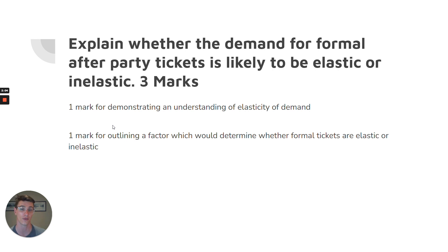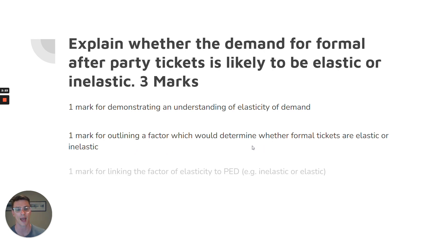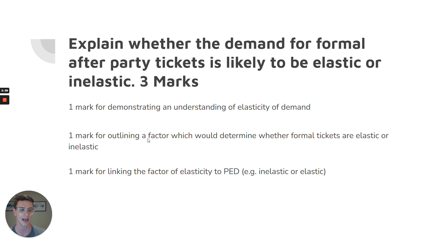The factors of elasticity of demand are: the degree of necessity, the availability of substitutes, time, and the percentage of income. So the second mark is for you to state which factor you think will determine whether it's elastic or inelastic. Finally, you need to link that factor to the degree of elasticity to show sound economic reasoning. You can't say it's elastic because it's not a necessity — that would not be right. But you could say it's inelastic because it is a necessity, or it's elastic because it's not a necessity. Both those arguments make sense.